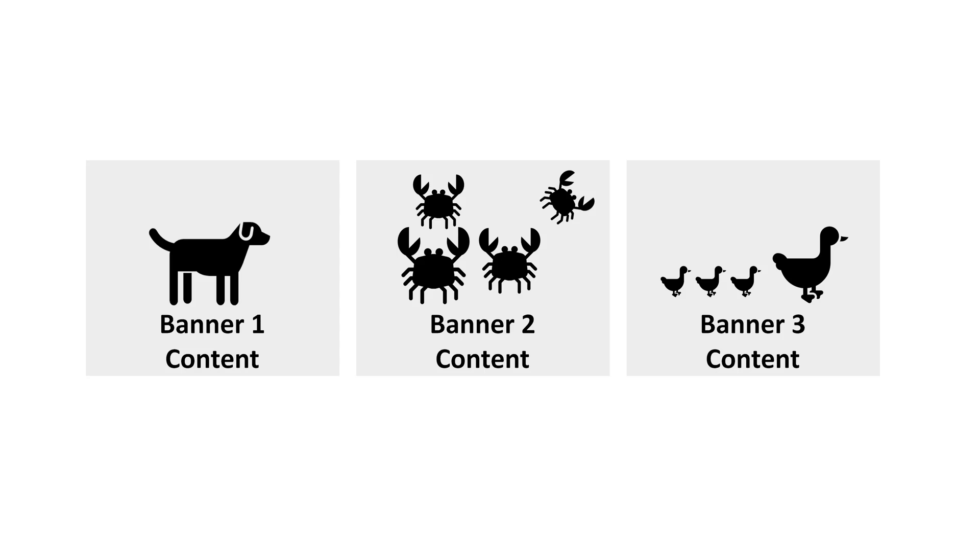The likelihood that users will click through frames increases if they're interested in the topics, but people usually have no idea what each banner topic is until they see the banner. One way to combat this is to put only banners with related content in the carousel. When using mobile devices, people might scroll through three or four frames at most, so limit the design to just a few frames.